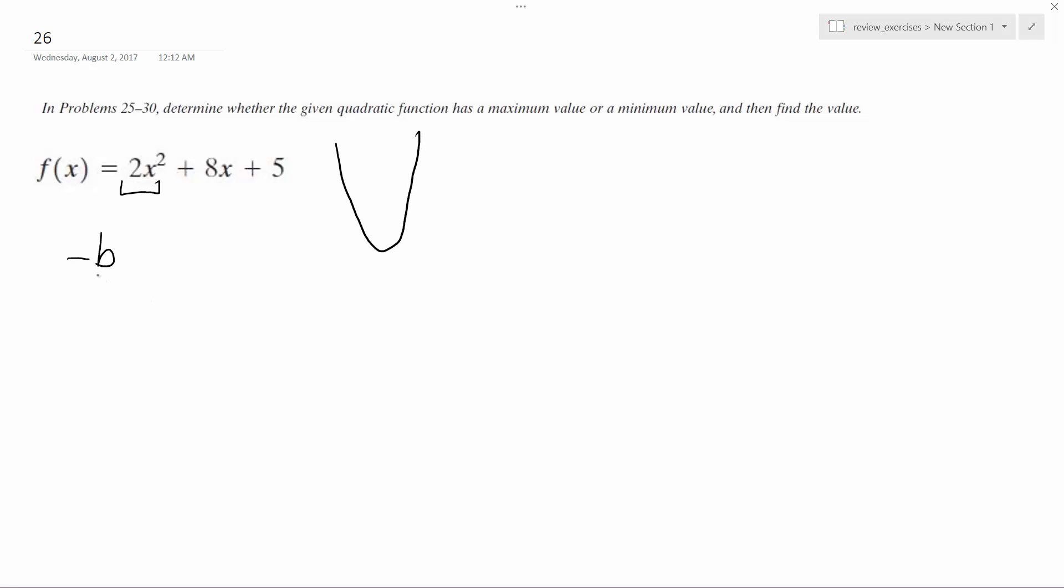And to find the low value, I'm going to do the formula to find the vertex, so negative b over 2a. It's going to be negative 8 over 2 times 2, which is negative 8 over 4, which is negative 2.